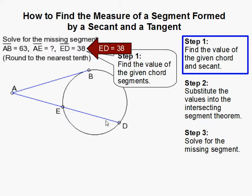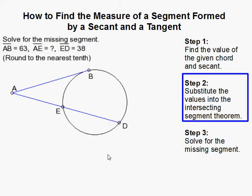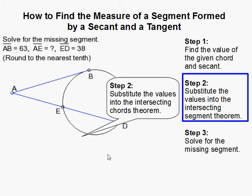We're given ED is 38, but we need to find AE. First we substitute into the intersecting chord theorem, which states that AB squared equals AE times AD.